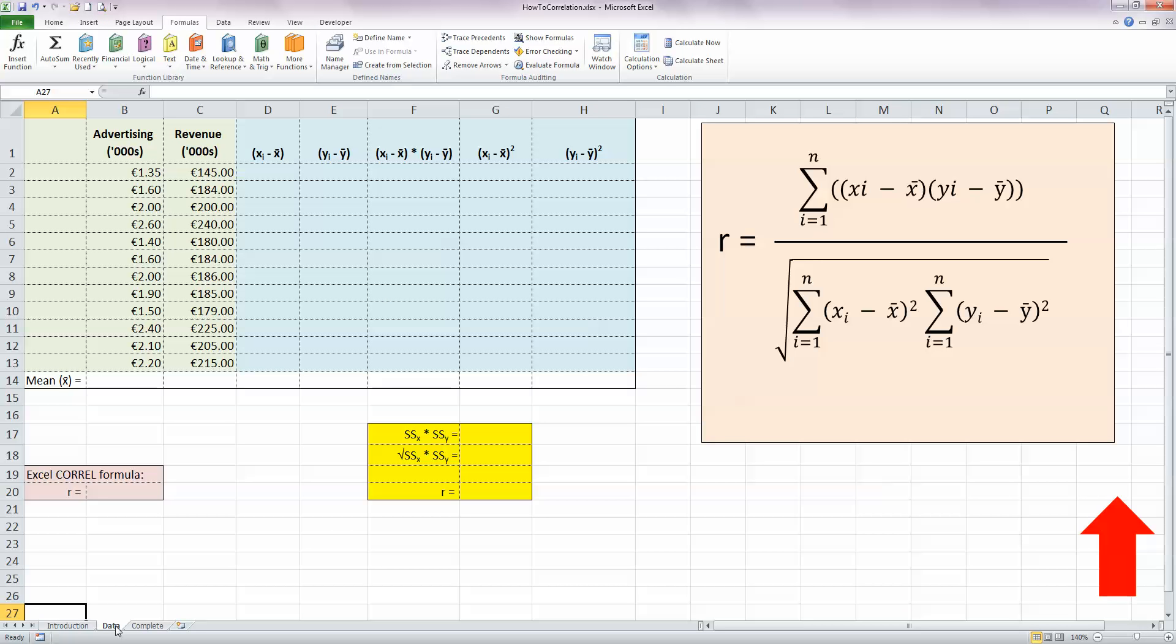So the correlation coefficient R gives us a way to measure how associated or related two variables are. Now in my data here I've got two variables: advertising spend in thousands in column B, and revenue in thousands in column C. And what I'd like to be able to do is see if there is a statistical correlation between these two variables.